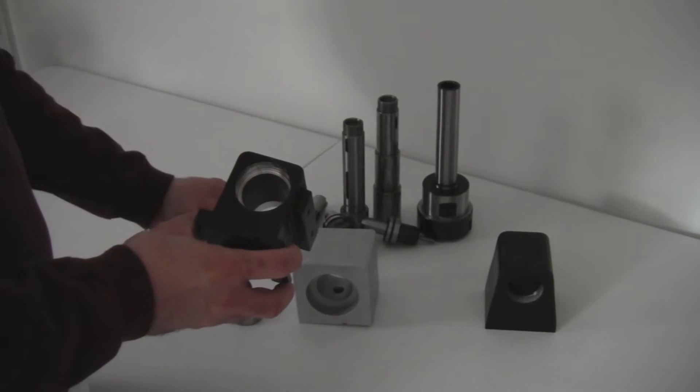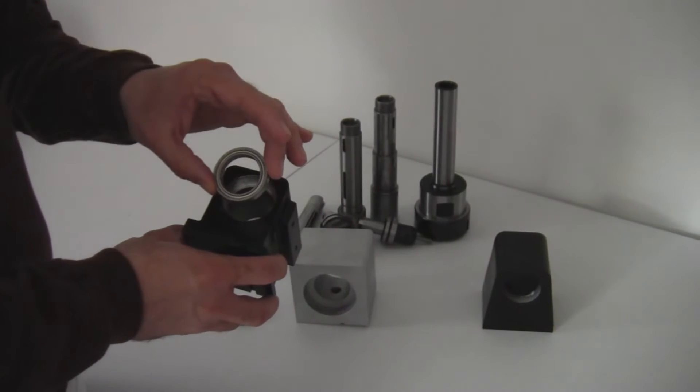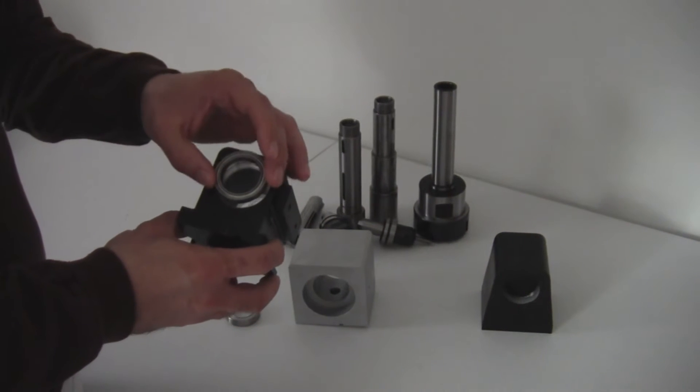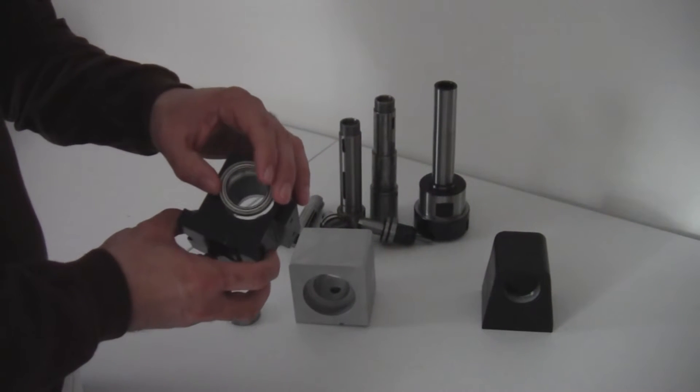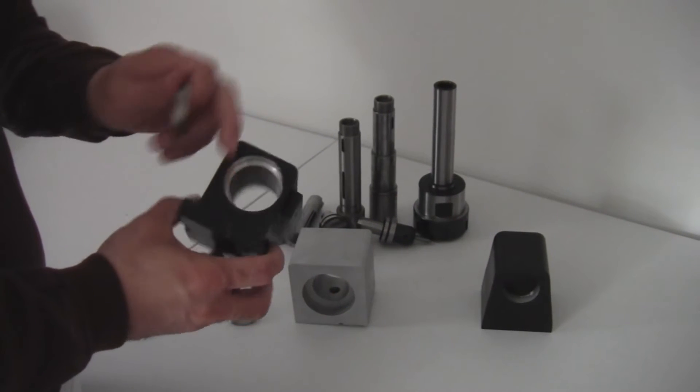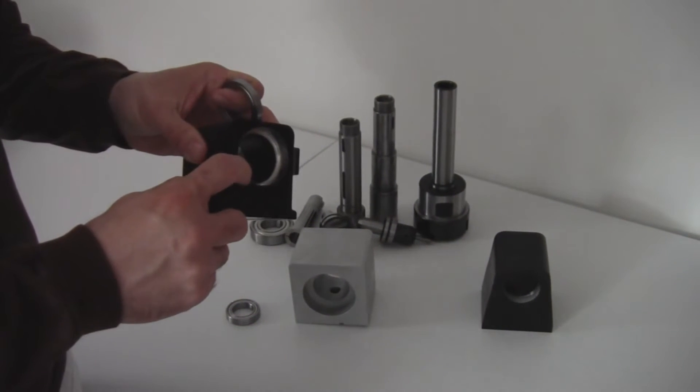When we put a large bore spindle in there, we have to go with a 30 millimeter inside diameter bearing, which makes the bearing kind of thin. So what we have to do is end up double stacking the bearings in there. In fact, the bearing sticks out just a little bit.